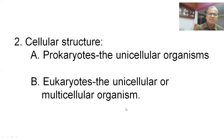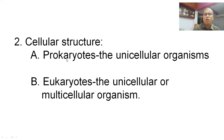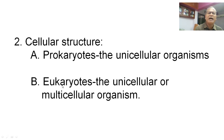Next, cellular structure. Prokaryotes and eukaryotes. 'Eu' means true, 'karyon' means nucleus. An organism with a well-defined or true nucleus is said to be a eukaryote. Eukaryotes can be unicellular to multicellular.